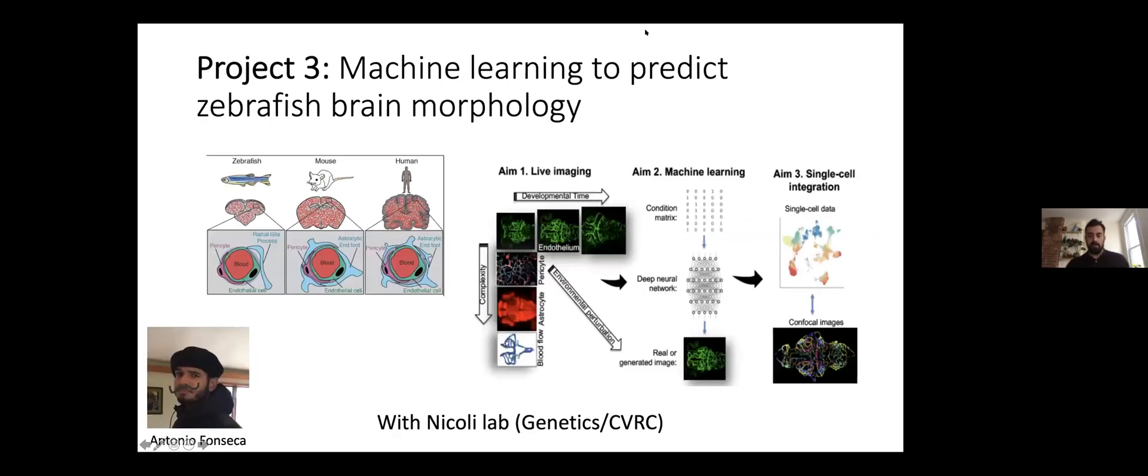We have been working a lot with single cell data, however we don't just work with single cell data. In this particular project, led by my student Antonio, we're working together with Stefania Nicoli who's in genetics in the cardiovascular research center. She works with zebrafish. Her lab is expert on zebrafish and in particular they are interested in the zebrafish brain morphology. They use confocal imaging to measure the brain, to image the brains of zebrafish in three dimensions. They do these measurements on fish in all kinds of conditions—different time points in development, different genetic backgrounds, different environmental perturbations.